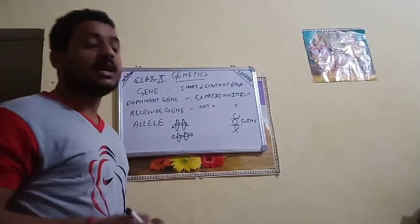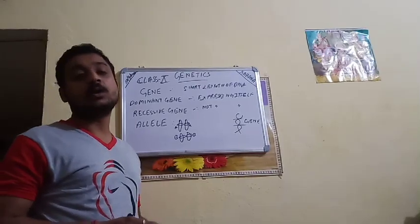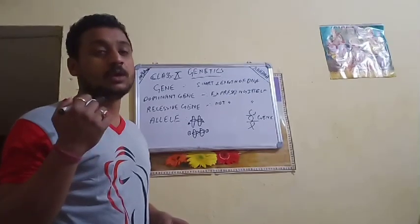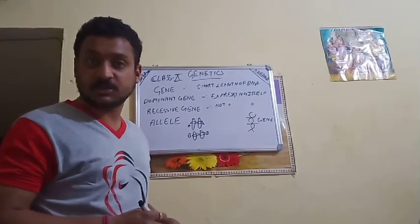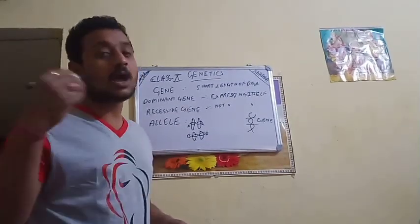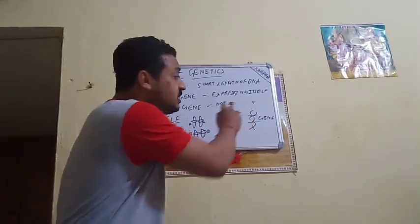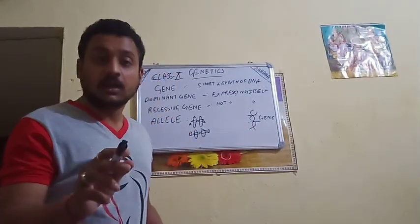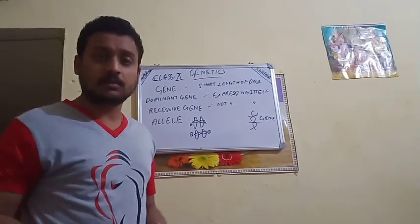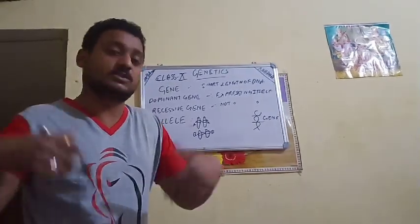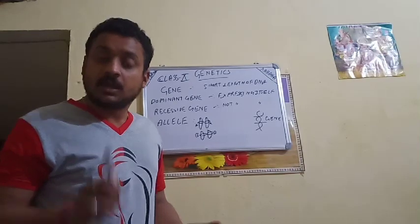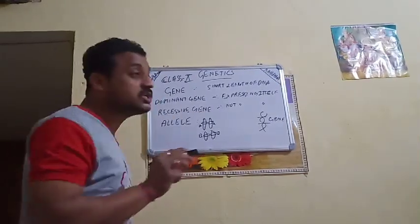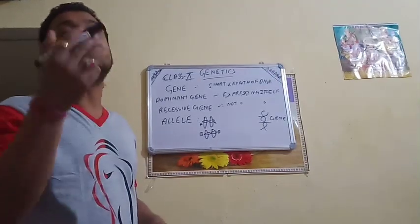For example, a person may have fair complexion or a darkish complexion. This is because of the gene. If the gene is coding for the protein fair, the person will look fair. If it is coding for darkish, the person will look darkish. We need to understand which gene will be dominant over the other.